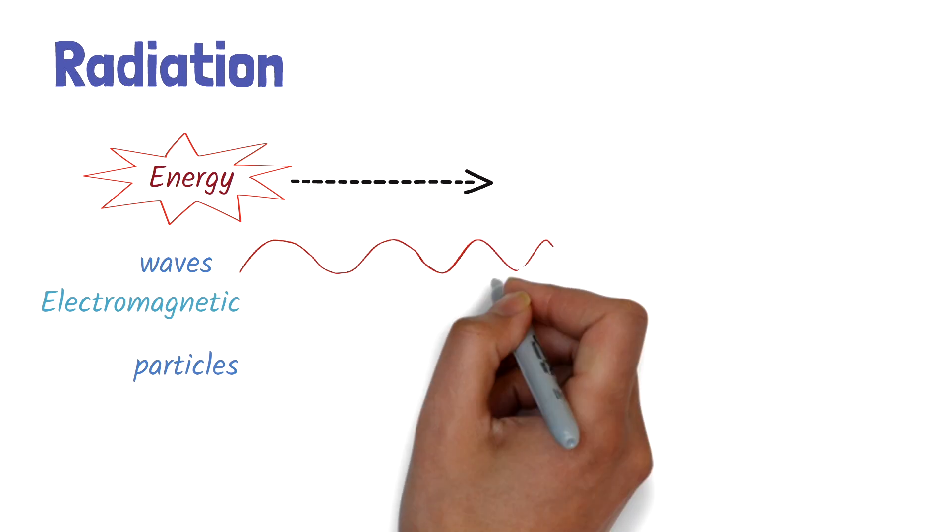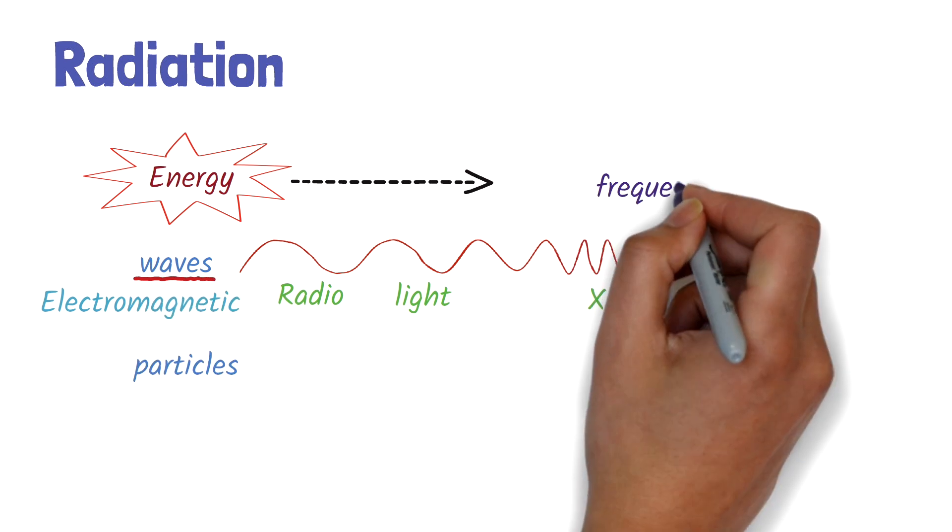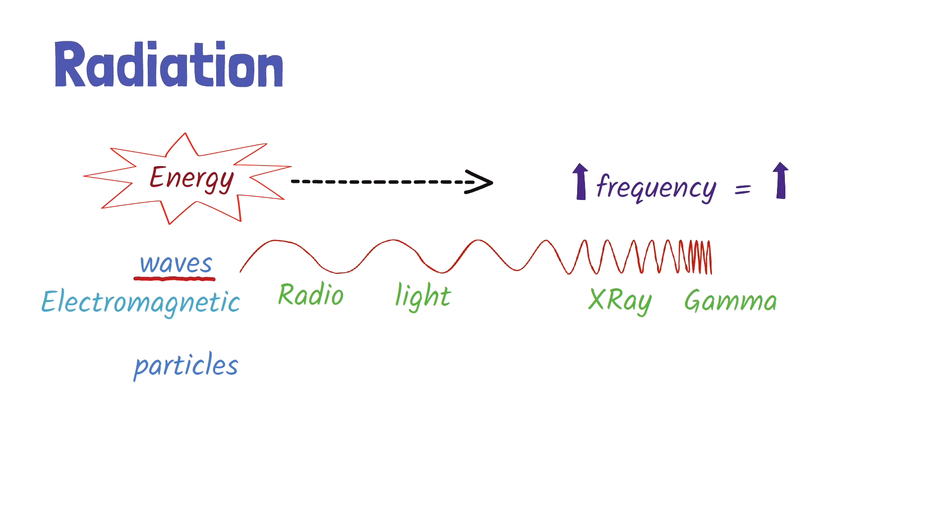Electromagnetic radiation, such as visible light, radio waves, X-rays, and gamma rays, travels in the form of waves. The energy that these waves carry depends on their frequency. Higher frequencies mean more energy.